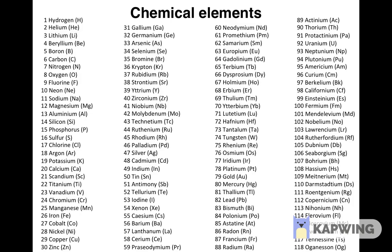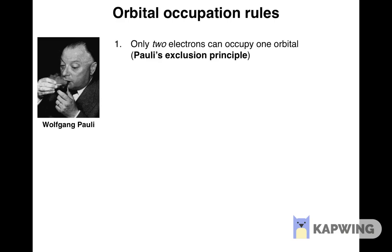The first rule is Wolfgang Pauli's exclusion principle, which we already mentioned in the previous video, according to which no more than two electrons can reside in the same orbital.